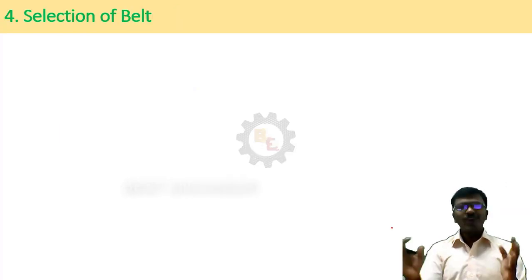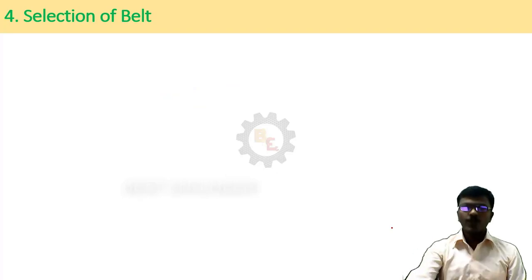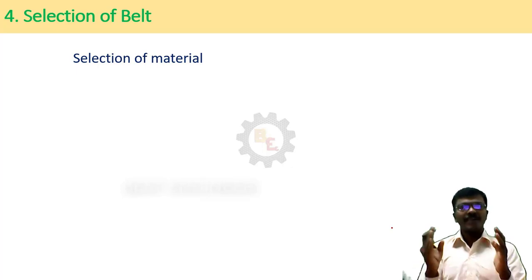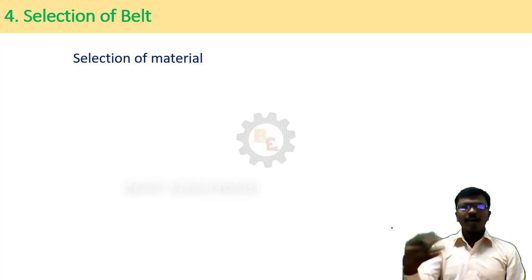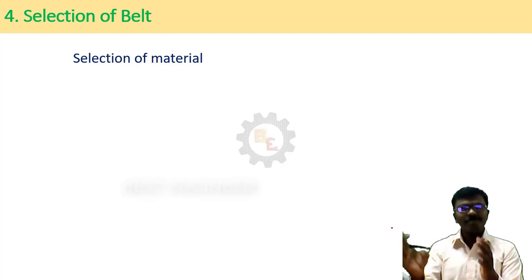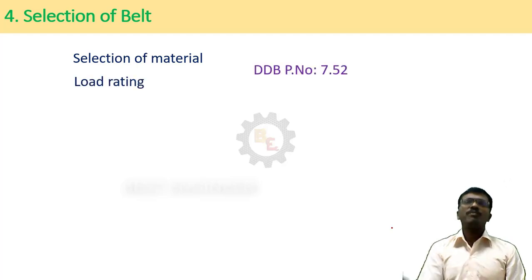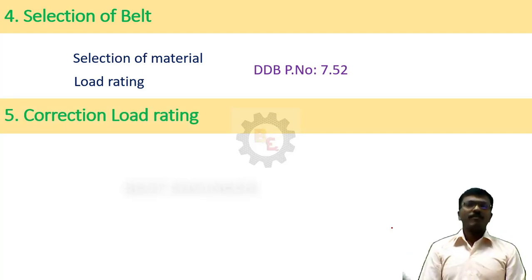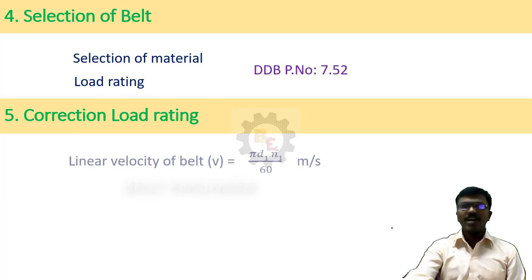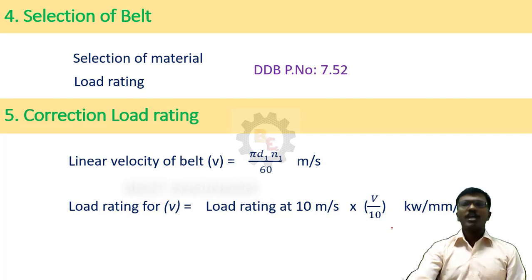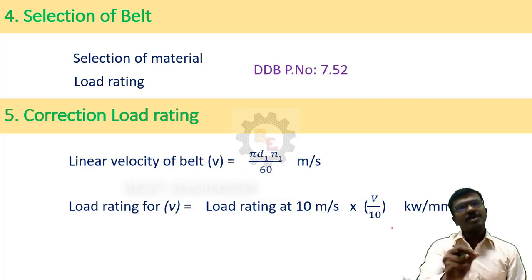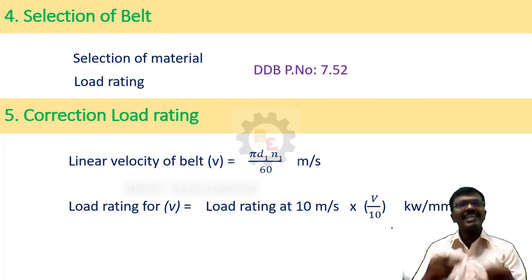Fourth step: we have to select the belt. First, select the material from the manufacturing catalog available in PSG Design Data Book, page 7.52. After that, find the load rating of your selected belt. Fifth step: find the load rating correction. For that, find the linear velocity of the belt, then find the load rating using the formula in PSG Design Data Book, page 7.52. The load rating is given at 10 m/s; we take that reference value and then adjust it according to your belt's actual linear velocity.